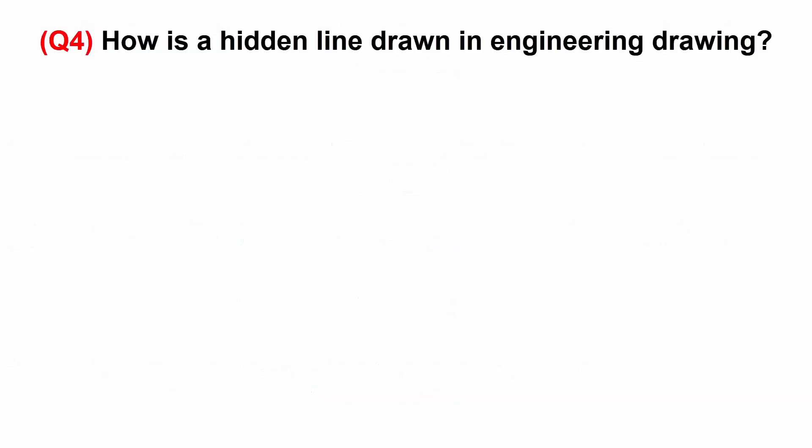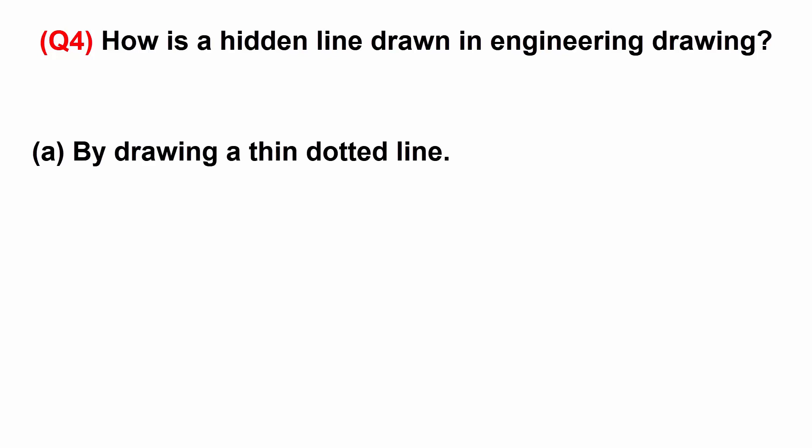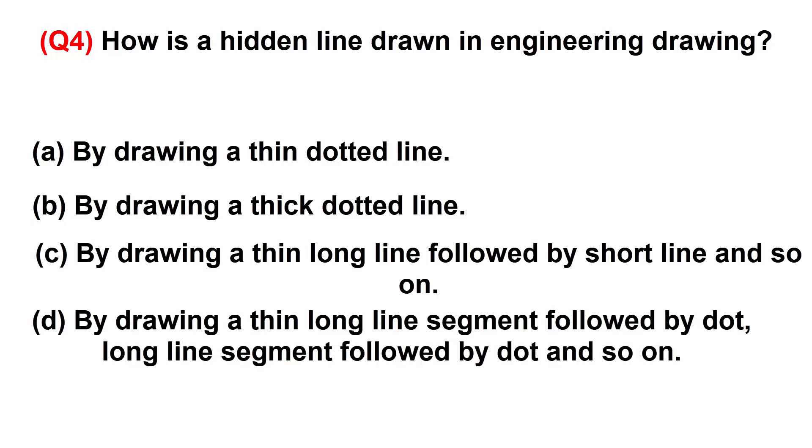How is a hidden line drawn in engineering drawing? A: by drawing a thin dotted line. B: by drawing a thick dotted line. C: by drawing a thin long line followed by short line and so on. D: by drawing a thin long line segment followed by dot and so on.